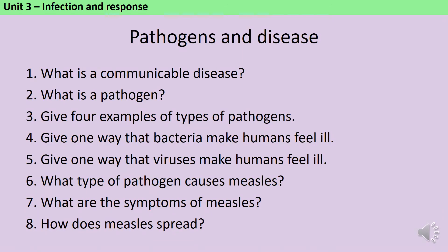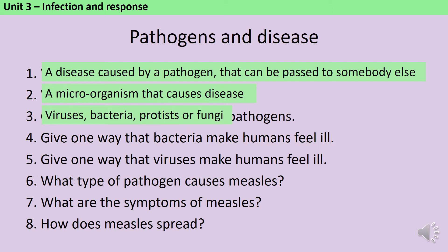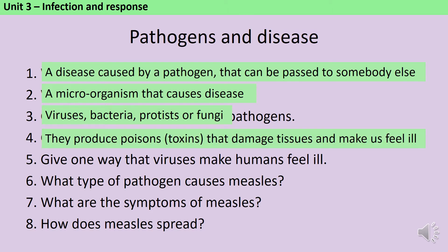A communicable disease is one that you can pass on to somebody else because it's caused by a pathogen. A pathogen is a microorganism that causes disease and it could be a virus, a bacterium, a protist or a fungus. Bacteria make you feel ill by producing poisons called toxins that damage tissues, whereas viruses reproduce inside cells causing cell damage.